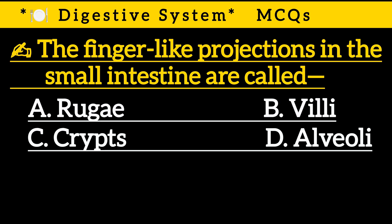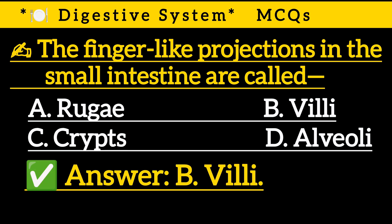Question 5: The finger-like projections in the small intestine are called — Option A: Rugae, Option B: Villi, Option C: Crypts, Option D: Alveoli. Correct answer is Option B: Villi.